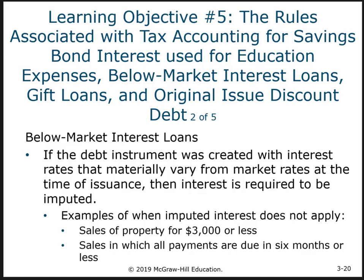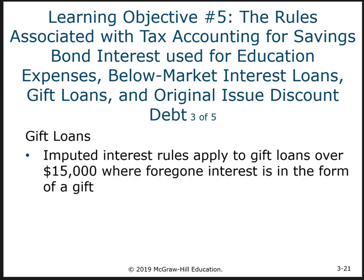An interesting situation arises when you loan someone money at low or zero interest. According to tax law, that interest must be imputed at a market rate — except where very small amounts or very short time periods are involved. With gift loans, income may be imputed but not included in income since it's treated as a gift, which is excluded from income.